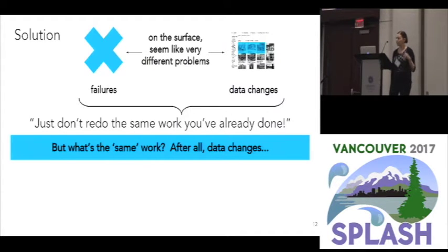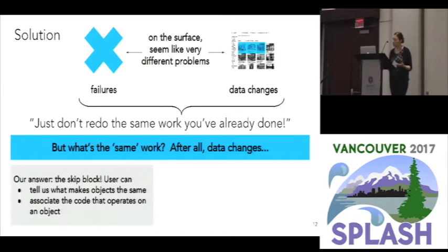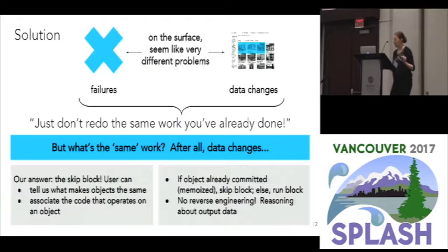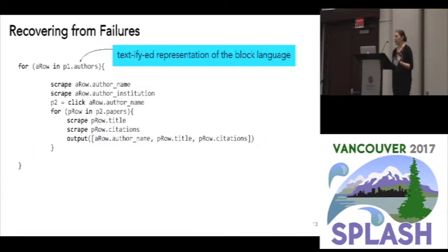This is complicated because how do you define 'the same work'? One of the things I've been talking about is that data is constantly changing — you get back to item 2 on that Craigslist page and all of a sudden item 2 is now at item 5 and item 2 is something totally new, or you get to Twitter and item 2 has the same tweet text but the retweet count has changed. So our answer is to let the user tell us what makes an object the same, and to associate the block of code that is going to interact with that object. When we get to an actual new object our runtime checks whether we have already committed or memoized information about that object; if we have, we skip the associated chunk of code; if not, we run it like normal. The great thing is there's no reverse engineering required — users just think about the high-level output data they've already defined.